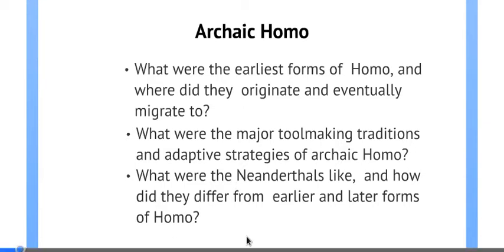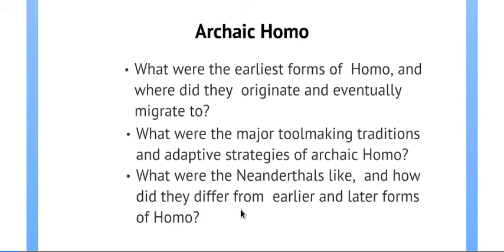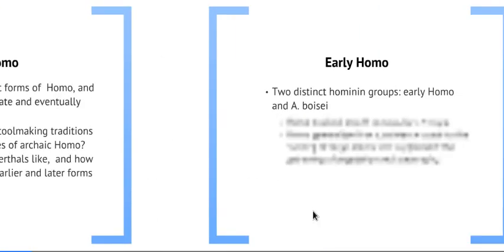We will also talk about the closest members of this genus that are actually human just like us, but a different subspecies — the Neanderthals. They lived not so long ago in evolutionary terms. They disappeared from the planet about 30,000 years ago, which is just the last few fractions of a second in the evolutionary time span of the planet. Alright, let's start exploring.